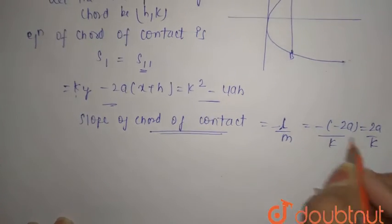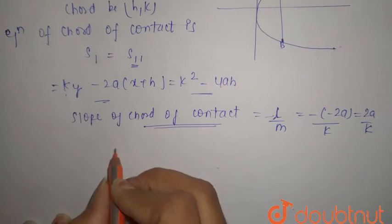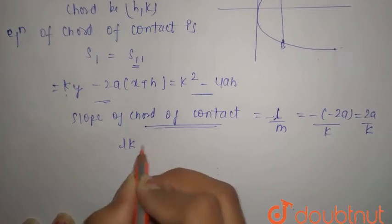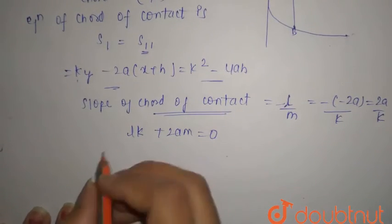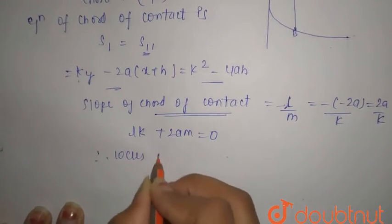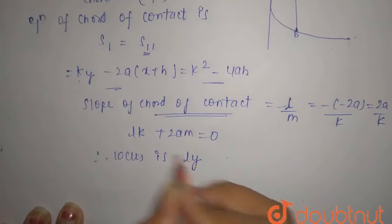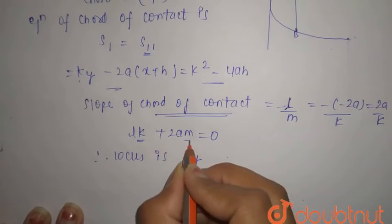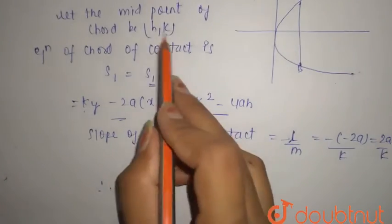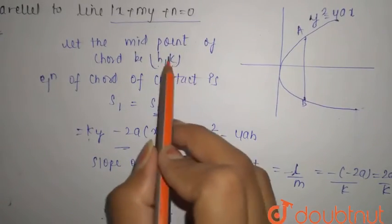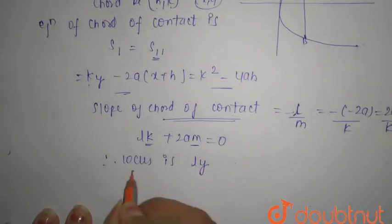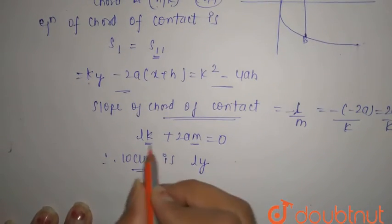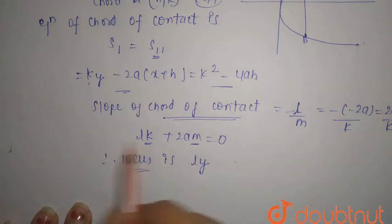So the locus is, therefore locus is ly, because we have to replace k and h. This is k and h, sorry, (h, k). We have to replace with (x, y), then we need to find a locus only. So we are going to replace here k and h. Here there is no h, that is why we are going to replace only k, that is y.